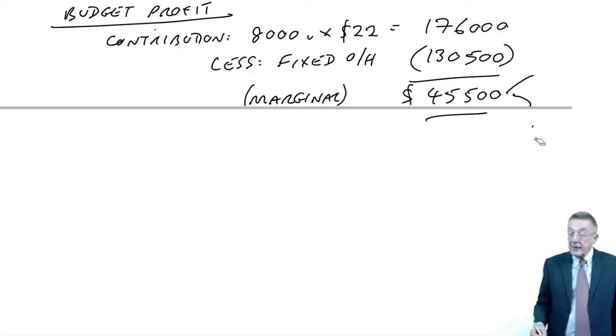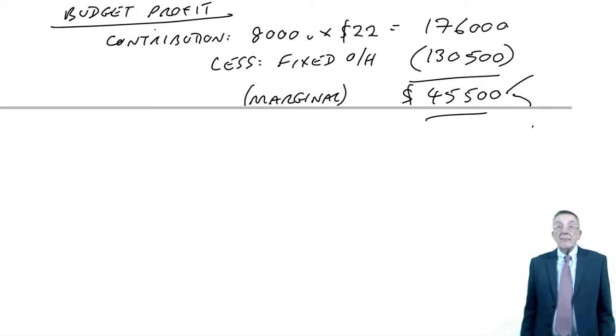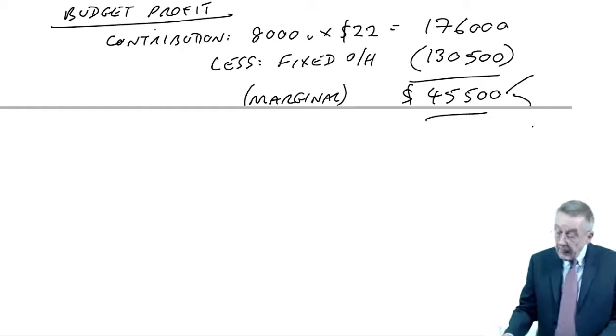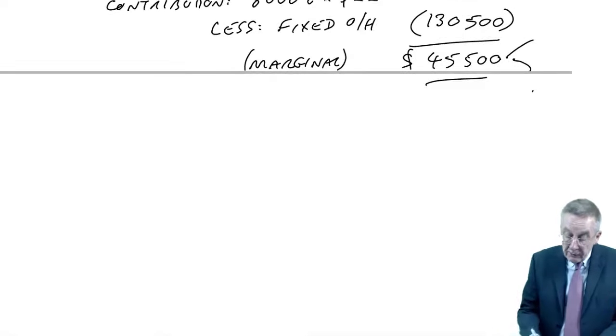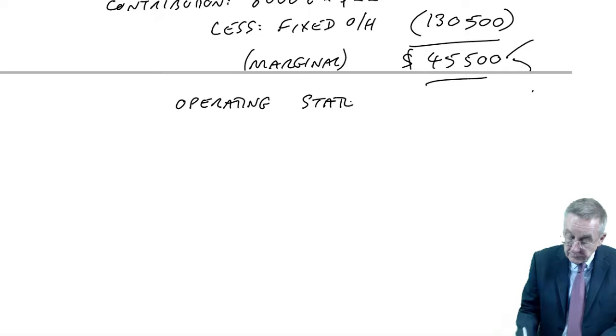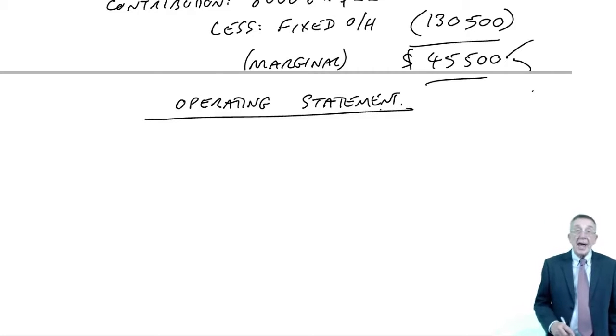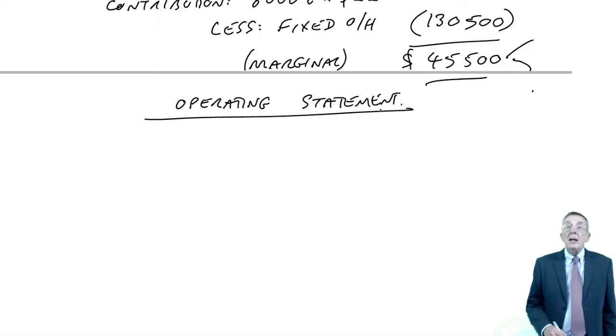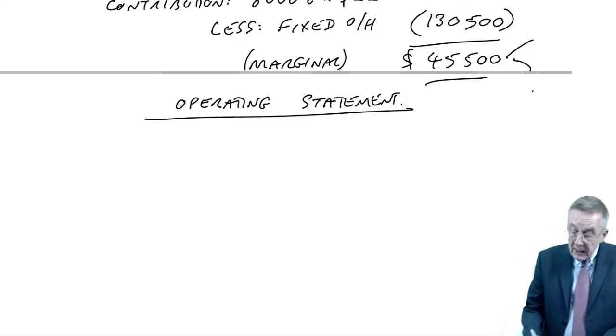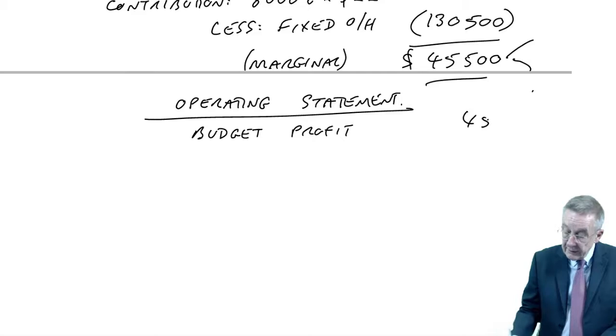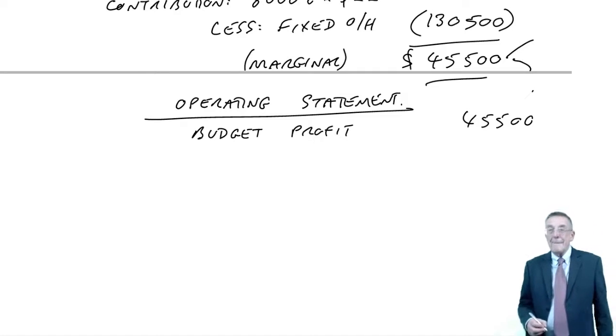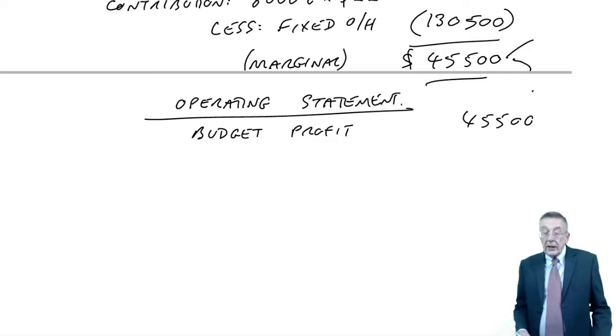Back to marginal. Let's finish this thing off. The budget profit is 45,500. And again, management want to know why actual profit is different. We look at all the variances. I am going to write up again the operating statement. And as you'll see, only two things change. I'll highlight them. Otherwise, everything's as before. We start off with the budget profit, which we've just calculated, 45,500.